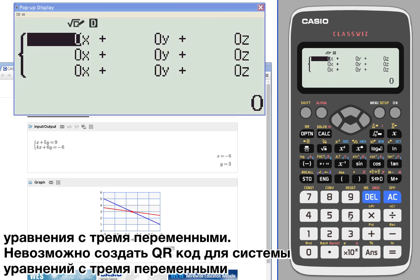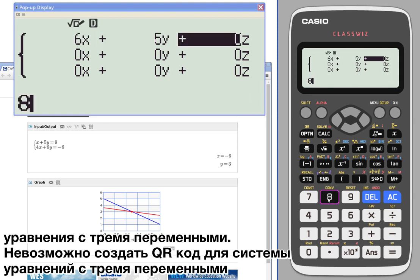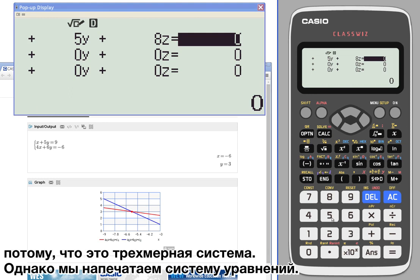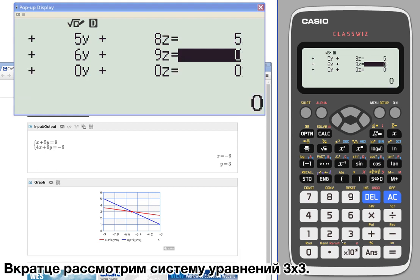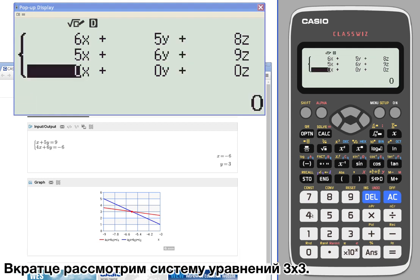Three variables will not generate QR codes because it is three-dimensional, but we'll just type it in real quick to take a look at a three by three equation.